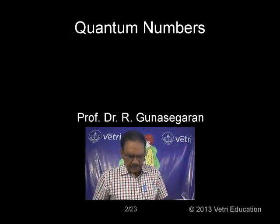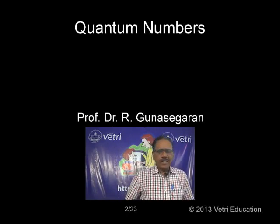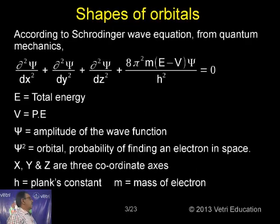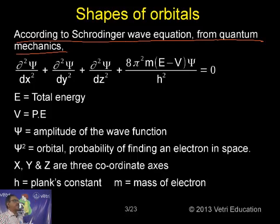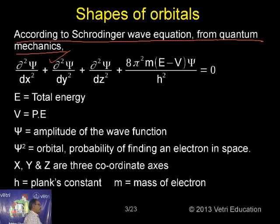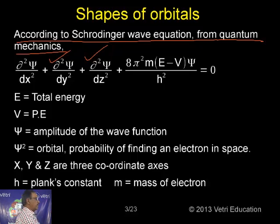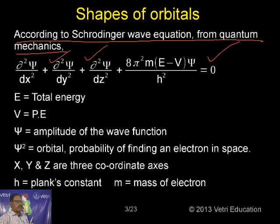Today I am going to discuss quantum numbers. According to the Schrödinger wave equation from quantum mechanics, which supports particle theory, Schrödinger proposed an equation: ∂²ψ/∂x² + ∂²ψ/∂y² + ∂²ψ/∂z² + 8π²m(E − V)ψ/h² = 0. This is the Schrödinger wave equation. Since you are at a high efficiency level, just remember the equation; derivation is not necessary.